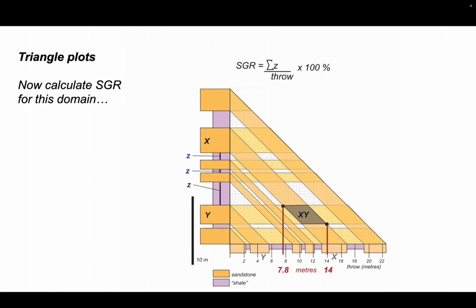These are the various shale units, there are three of them, that will have been swept past unit Y as X comes down to juxtapose against it. Now we have to sum the shale thickness between these two sandstone formations, and we do that. It comes out at five meters. To calculate the shale gouge ratio, we need to divide this summed shale thickness by the throw. We're going to look at two throws which represent the extreme values from our triangle plot.